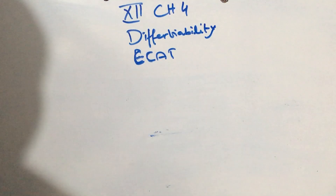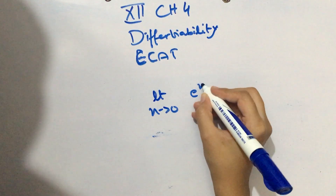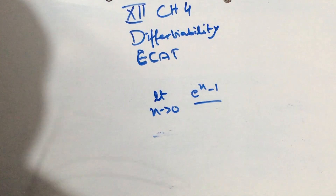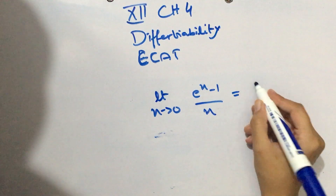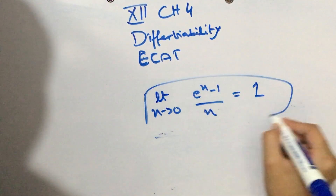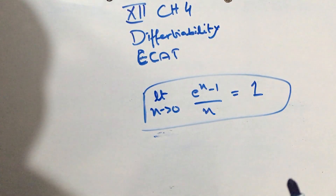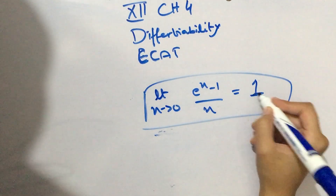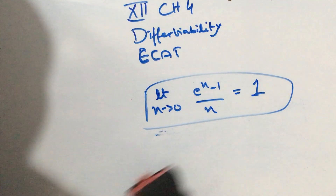One more result is involved. What is the limit as x tends to 0 of (e^x − 1) / x? This is equal to 1. This result is used when the expression e^x − 1 over x appears, so you need to know that this limit equals 1.